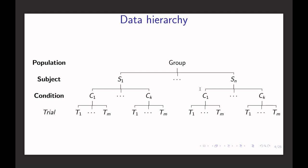Most of the time, people ignore the trial level — the cross-trial variability. That's why the popular approach deals with only three levels: population, subject, and condition. More recently, research indicates it would be better to incorporate trial-level effects, meaning we deal with a four-level structure. Just as subjects are representatives of a hypothetical population, multiple trials are also representatives for each condition, and ideally we should treat those trials the same way as we deal with subjects.